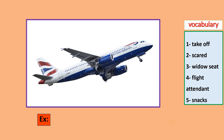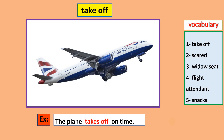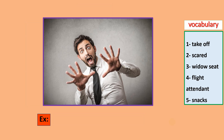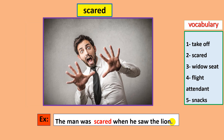The first one — have a look at this one: take off. I want you to bring out your notebook and try to put it in a sentence on your own. Here is an example: the plane takes off on time. Have a look at this man. He's scared. The man was scared when he saw the lion.